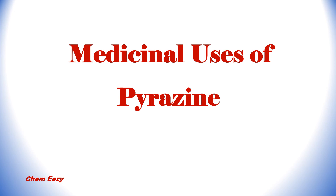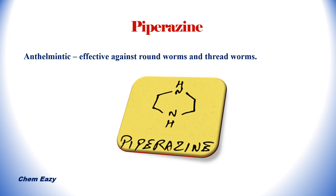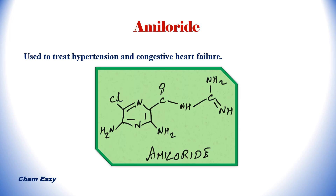Now let us see some medicinal compounds which contain pyrazine in their structure, along with their medicinal uses. The first one is pyrazinamide. This drug is used in the treatment of tuberculosis, and here you can find the pyrazine nucleus in its structure. The second one is piperazine, which is hexahydropyrazine. This drug is used as an anthelmintic effective against roundworms and threadworms. One more drug containing pyrazine in its structure is amiloride, which is used to treat hypertension and congestive heart failure, and the pyrazine nucleus is present in its structure.